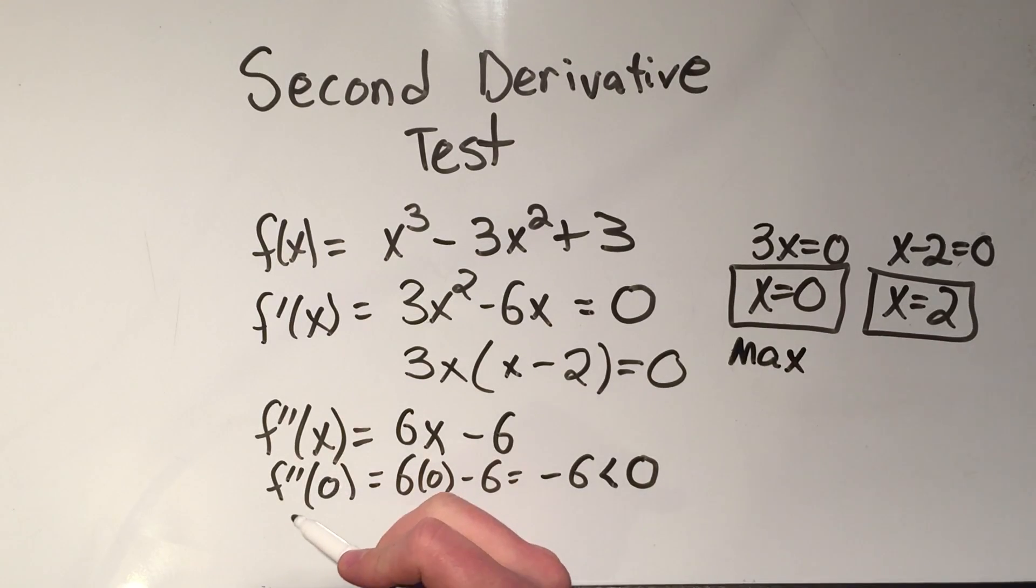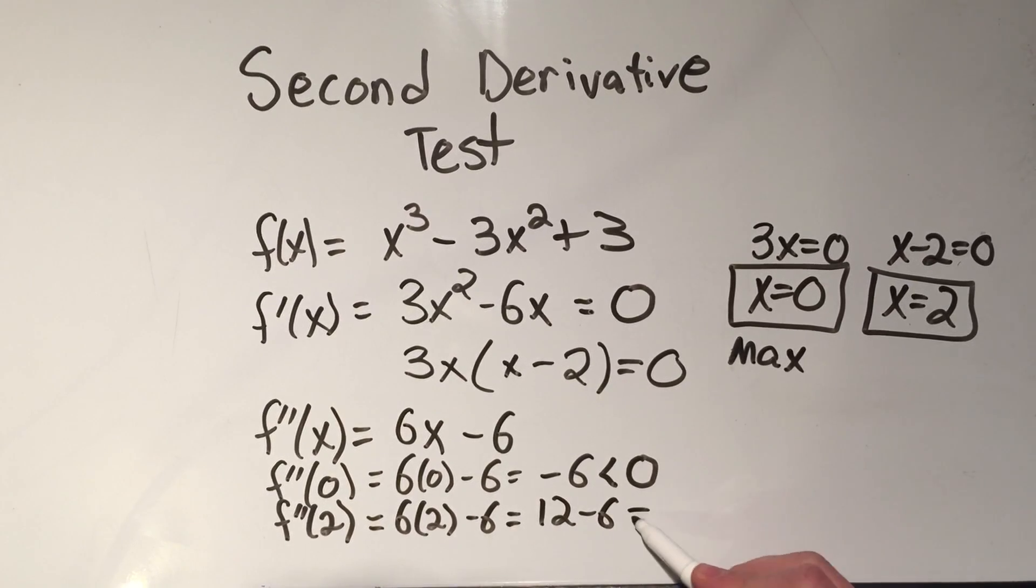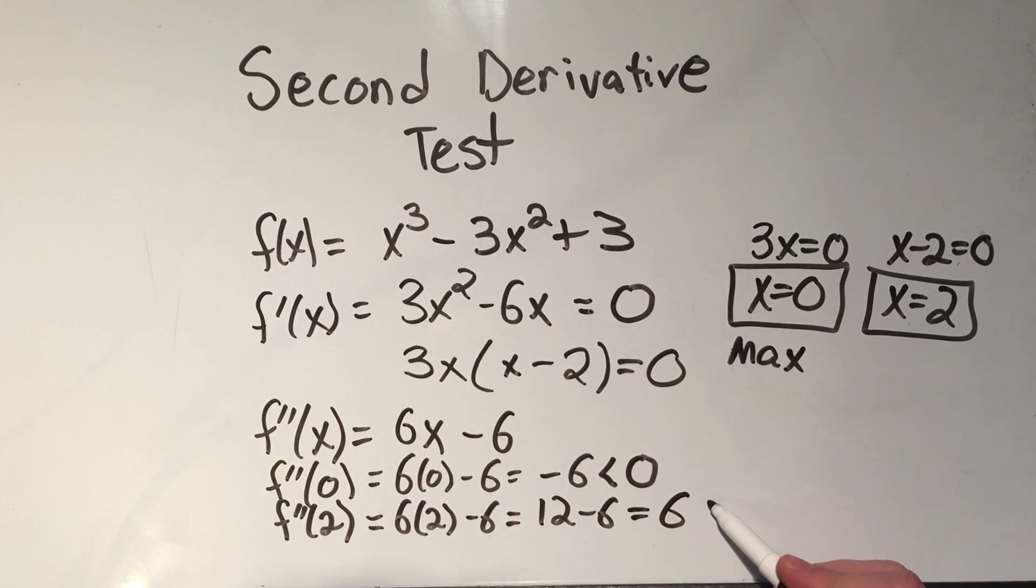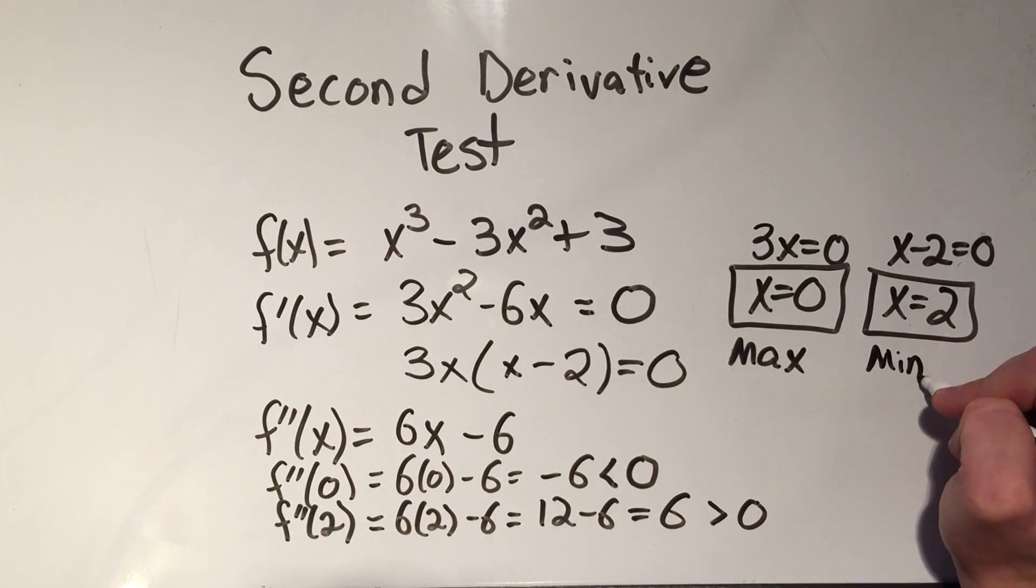Let's try with my other critical point at 2. Now if I plug in 2, I'll get 6 times 2 minus 6. That's 12 minus 6, which is 6. And that's positive. That's greater than 0. And the second derivative test tells me that if I get a positive value there, that means that critical point will give me a minimum value.